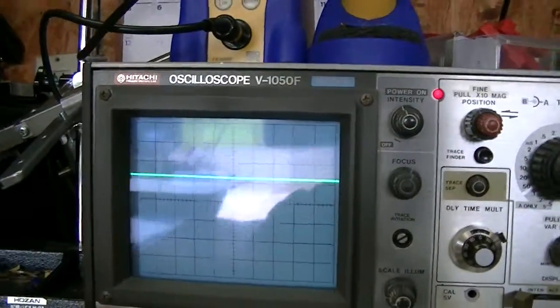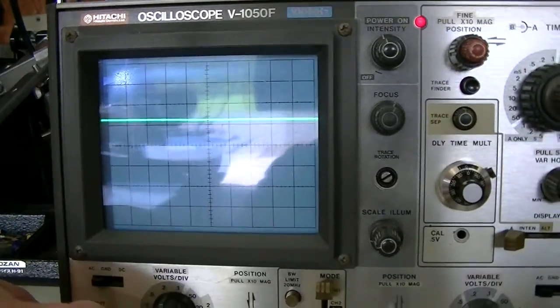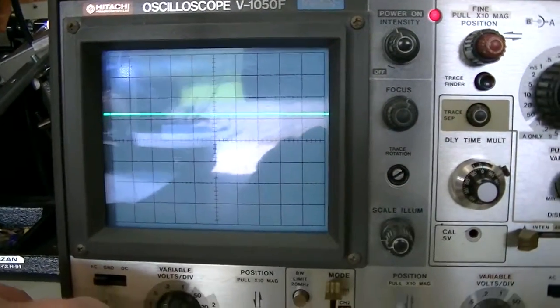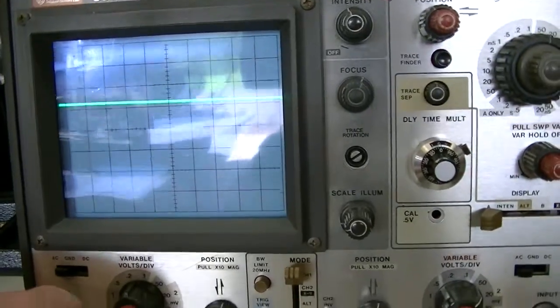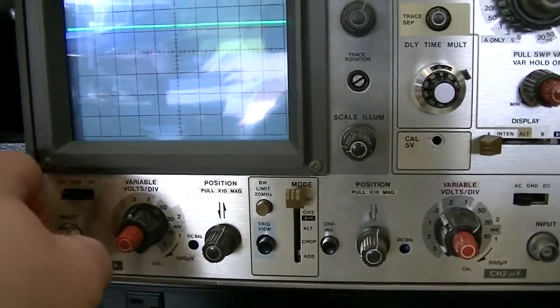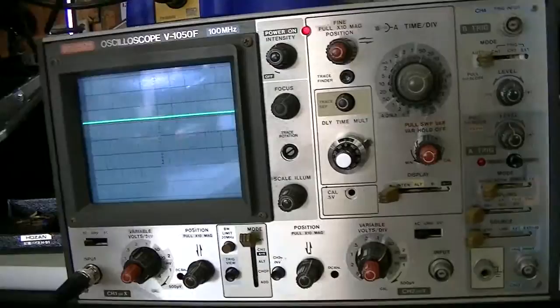Now this happens to be a scope I just bought not long ago and I'm having a lot of trouble with a lot of noise on it. So you're going to see some noise on the waveform, but that's not coming out of this signal generator. It's coming out of this scope.